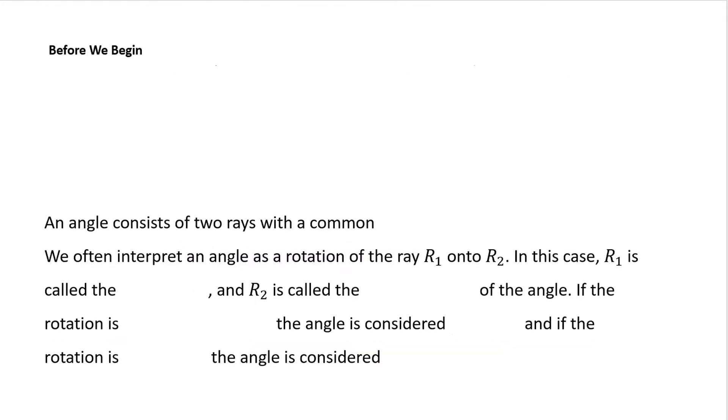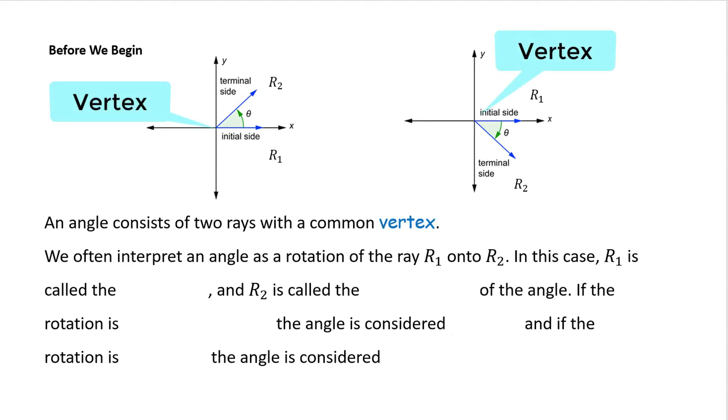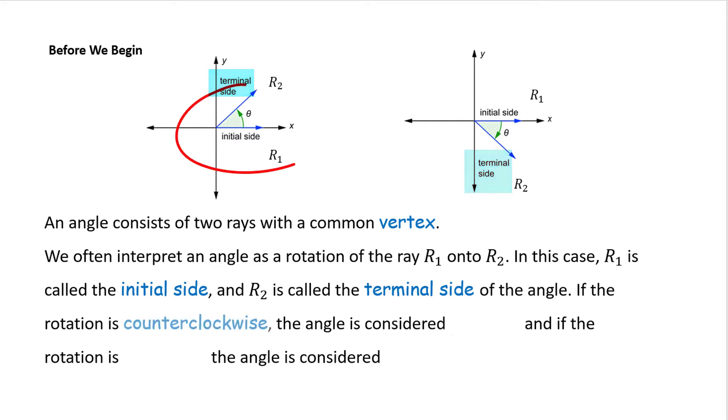Before we begin our study of angle measurement in earnest, let's refresh on angles from geometry. An angle consists of two rays with a common vertex. We often interpret an angle as a rotation of the ray r₁ onto r₂. In this case, r₁ is called the initial side and r₂ is called the terminal side of the angle. If the rotation is counterclockwise, then the angle is considered positive. And if the rotation is clockwise, the angle is considered negative.